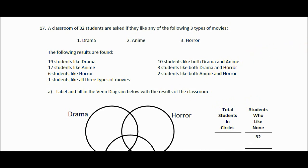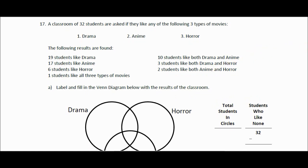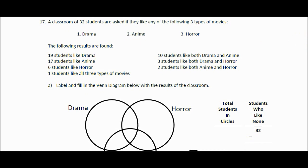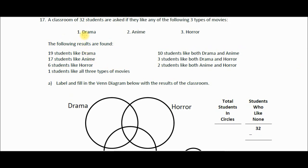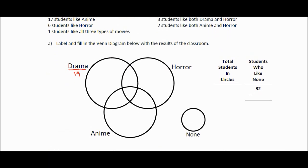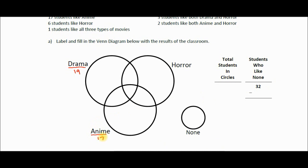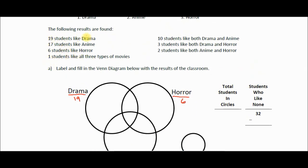I'm going to go through the steps as outlined on your Venn diagram worksheet. Step number one: label the circles with your categories — that's been done for you already. Then we write in the number of students that fall into each circle. For drama we've got 19, for anime we've got 17, and for horror we've got 6. So we're counting the number of students that like just that one thing.